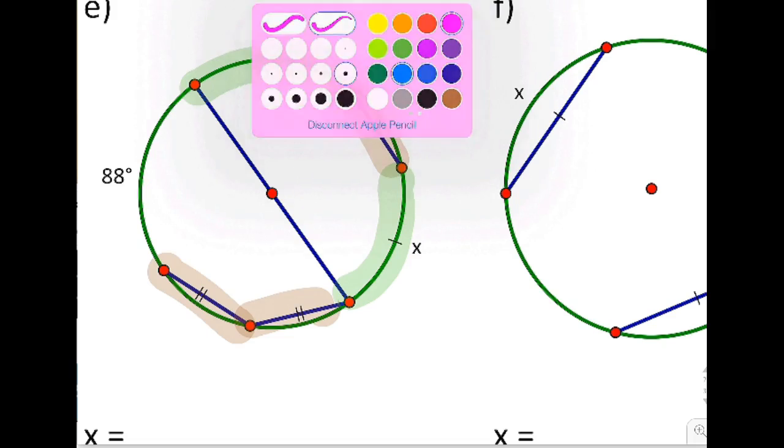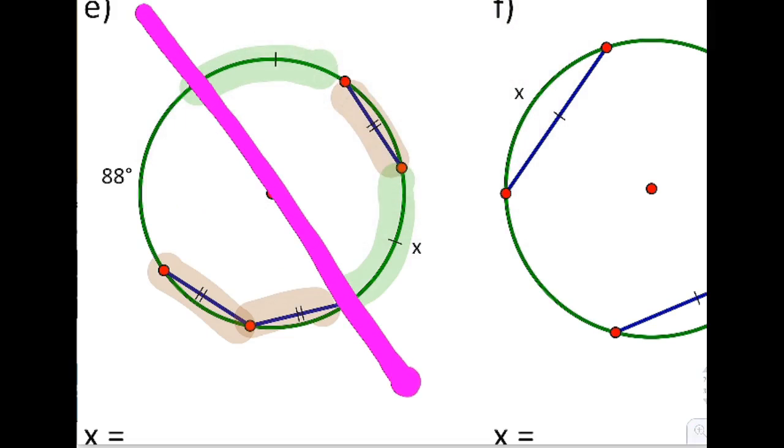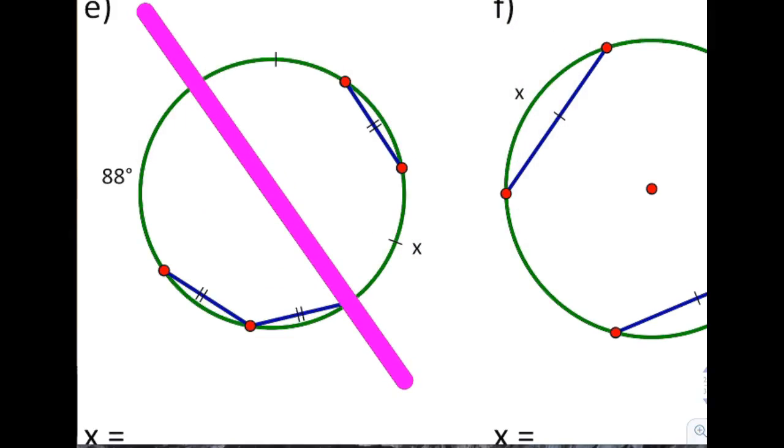But don't look past the fact that there's a diameter going through the middle of this thing. So if there's 180 on the left, then you already know 88.